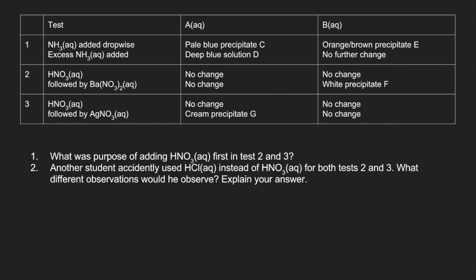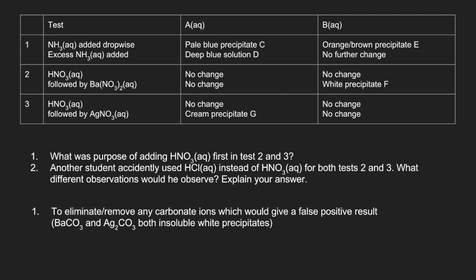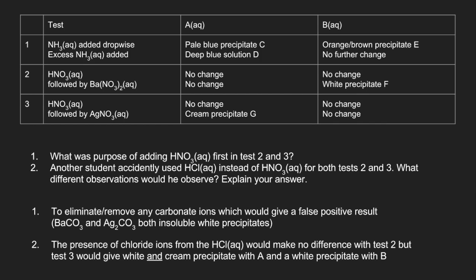So question 1, why did they add nitric acid first in tests 2 and 3? Well what that does is it will eliminate or remove any carbonate ions that may be present and could give a false positive result. Because barium carbonate and silver carbonate are both insoluble white precipitates. So if carbonate ions are present, they would give a false result. In question 2, the presence of those chloride ions from the HCl would make no difference with test 2. But test 3 would give a white and cream precipitate with A and a white precipitate with B.